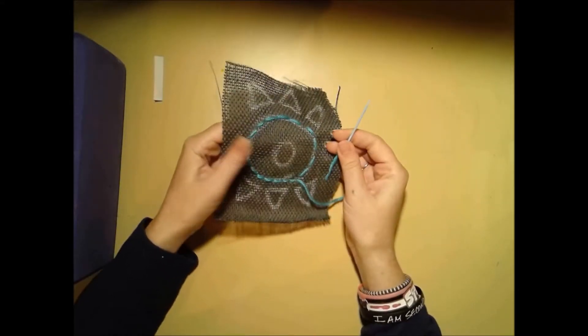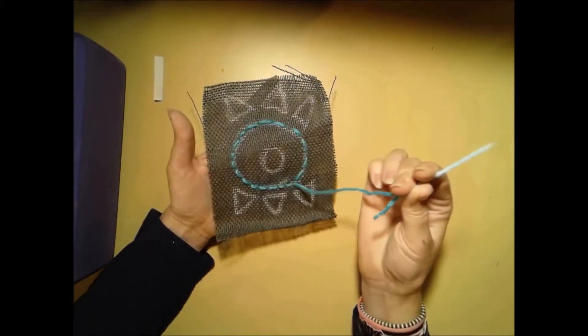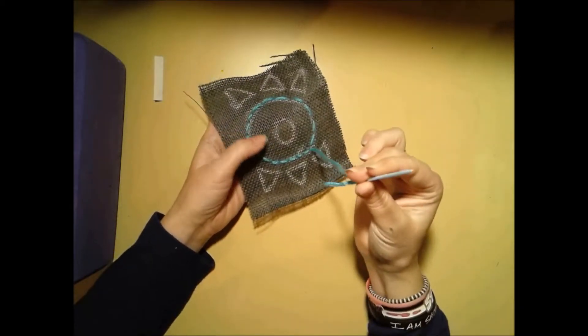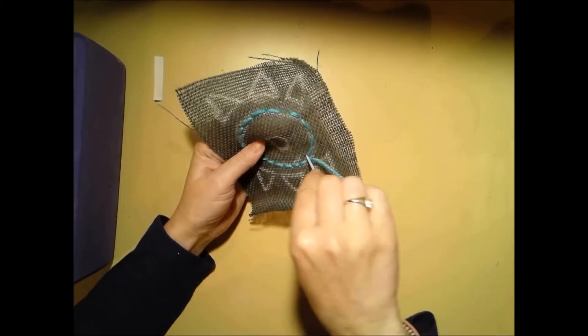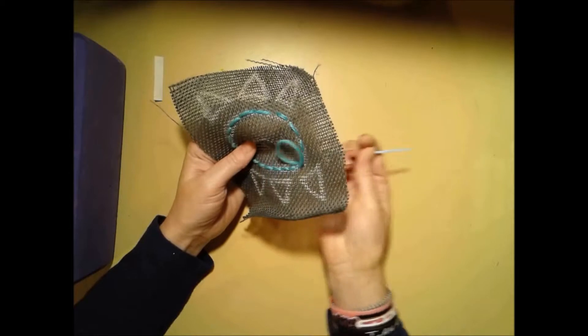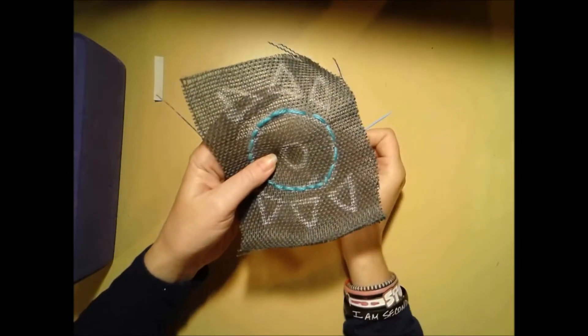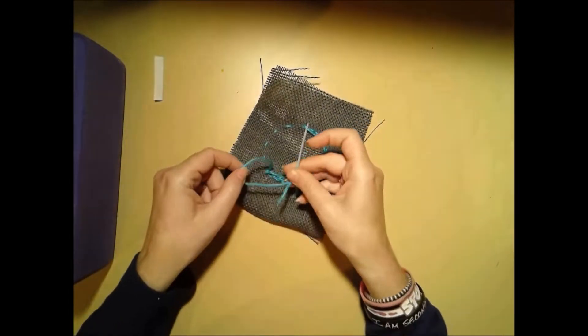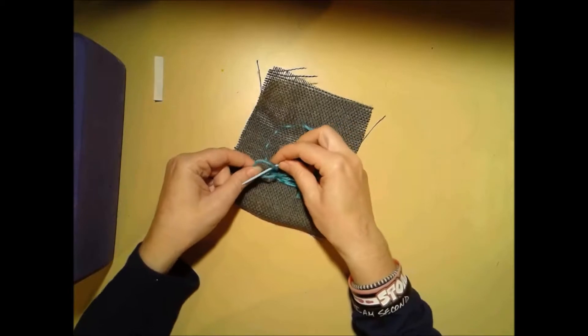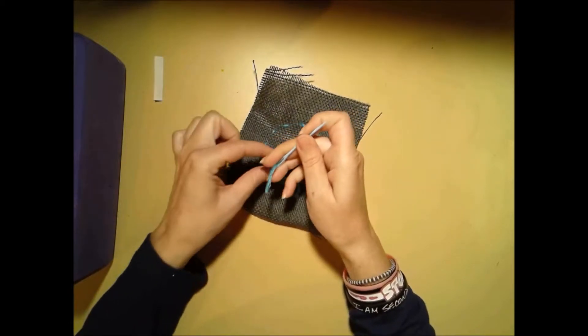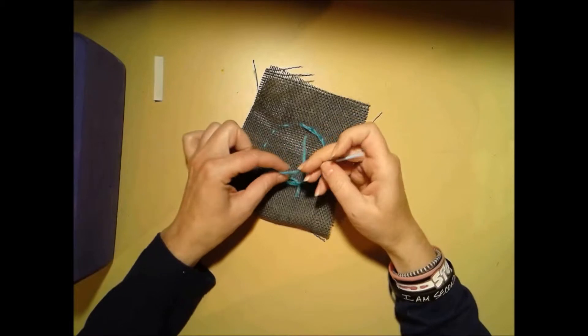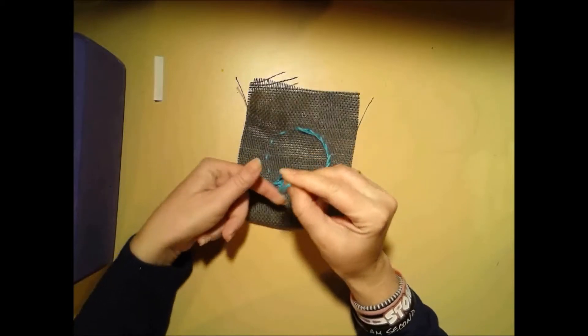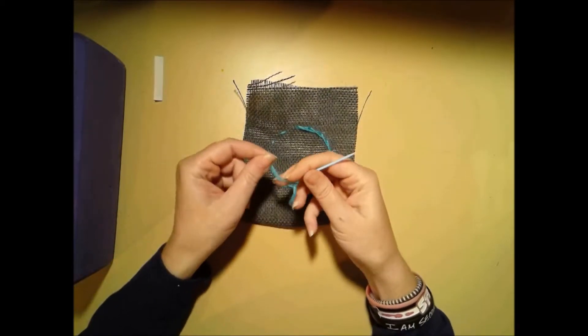When you get to the end and you've finished tracing, or if you start to run out of yarn, you're going to want to put another knot in the back. So if you end it in the front, you're just going to take your needle and take it down so that it's behind in the back. Then we can make another knot. So I'm just going to make a loop again, put the needle through, and pull it. I'm going to keep my fingers close to the fabric and push this down so the knot is by the fabric.